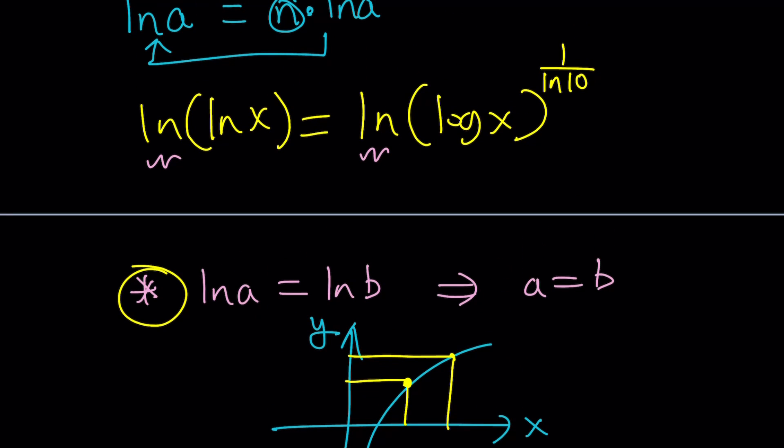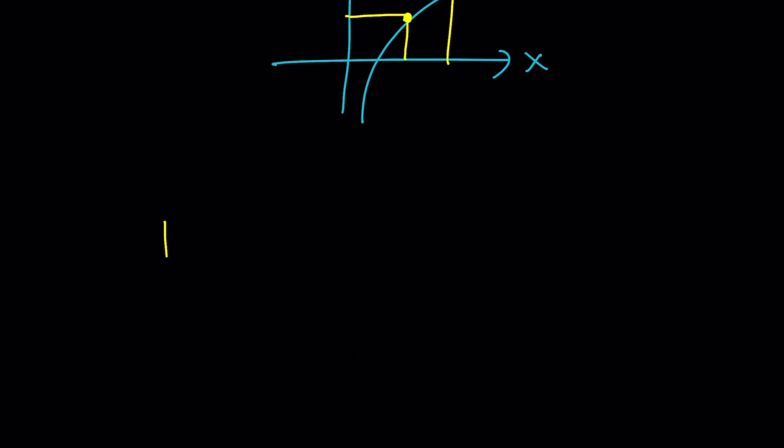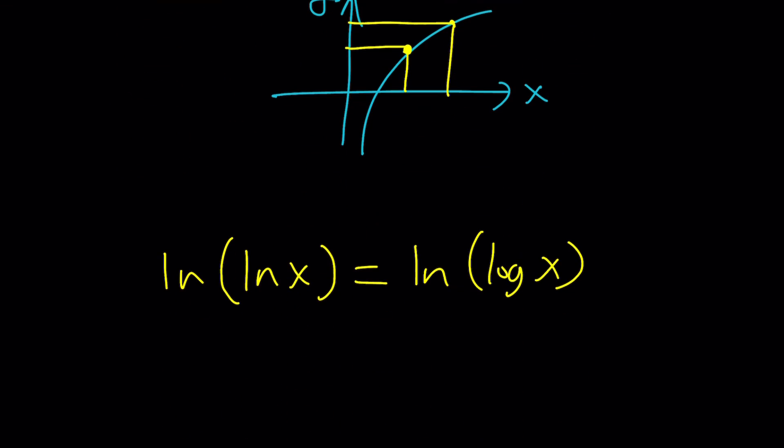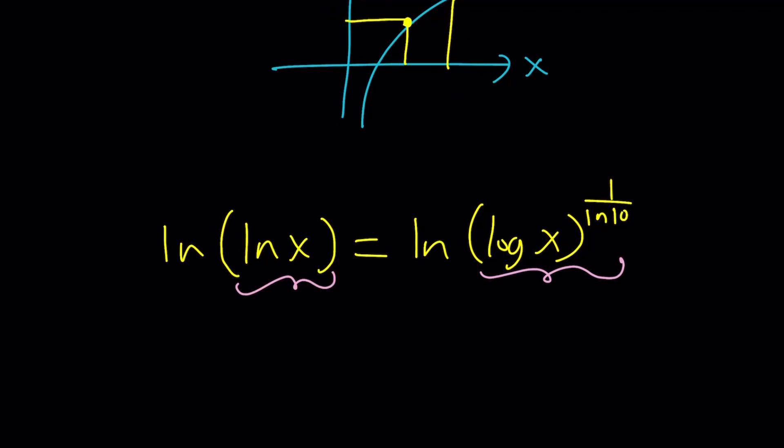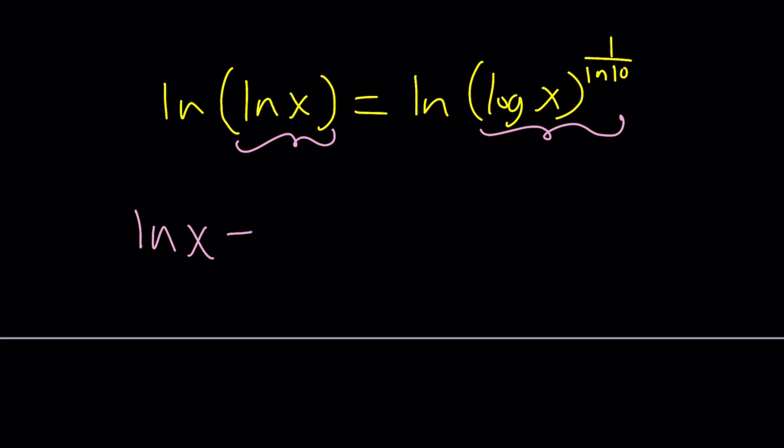Anyway, so this property is really nice because that gives us the answer. So using that property we can safely say that ln ln x equals ln log x to the power 1 over ln 10. Now here's what we're going to do. This is going to be our a and this is going to be our b. So now we can say ln x equals log x to the power 1 over ln 10. So far so good. This is my a, this is my b. ln a equals ln b implies a equals b.